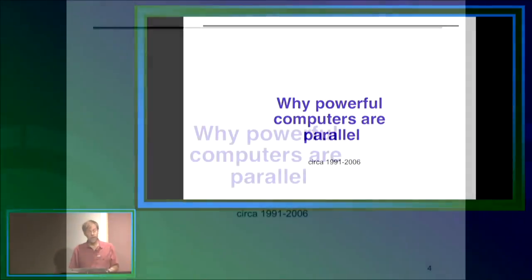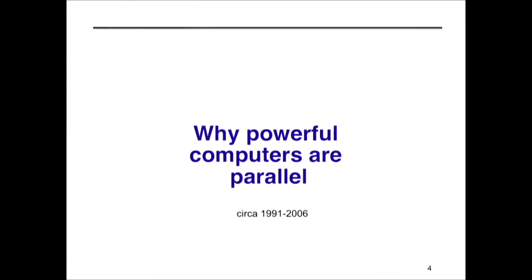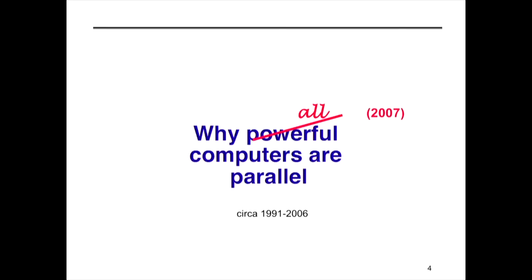This is why powerful computers are parallel. The data from 1991 to 2006 shows the trend, but starting in 2007, because of technological trends I'll explain, everything had to become parallel. Let me give you some history of what people thought was going to happen, and some famous bad quotes by famous people about where they didn't see what was coming.